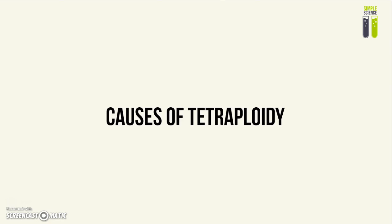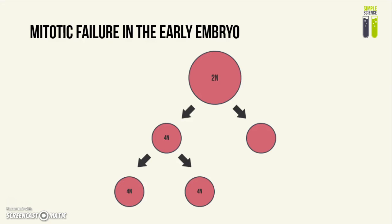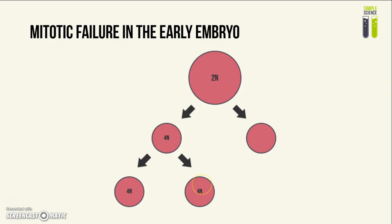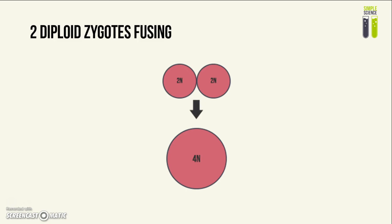Next, I want to explore the causes of tetraploidy. Tetraploidy can be caused by a failure in mitosis in the early embryo. During mitosis, all of the chromosomes move to one daughter cell rather than the other. One cell degenerates, while this one becomes a tetraploid cell. As mitosis continues, the daughter cells will also be tetraploid because mitosis conserves the chromosome number rather than halving it, resulting in an embryo whose cells are all tetraploid. Another cause would be two diploid zygotes fusing.